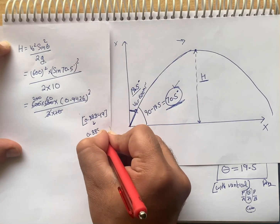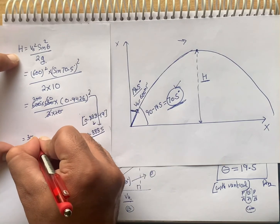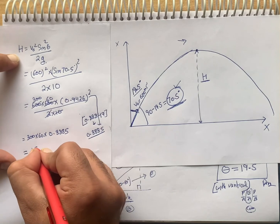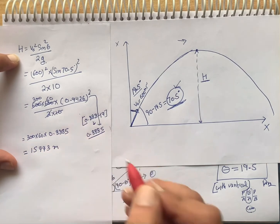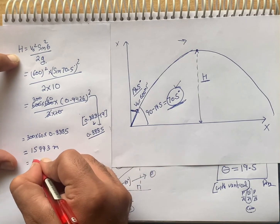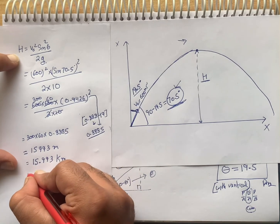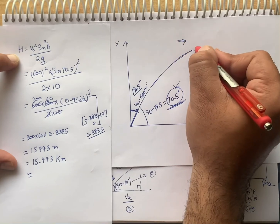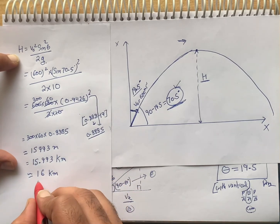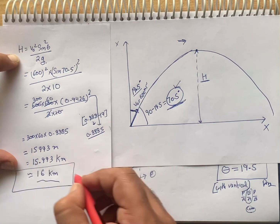The value of sin 70.5 is approximately 0.9426. Its square is approximately 0.8885. So H = 300 × 60 × 0.8885 = 15,993 meters. Converting to km, this is approximately 15.993 km, which we round off to approximately 16 km. So the pilot must fly at a minimum altitude of 16 km from the ground to avoid being hit. This is the answer to our second part.